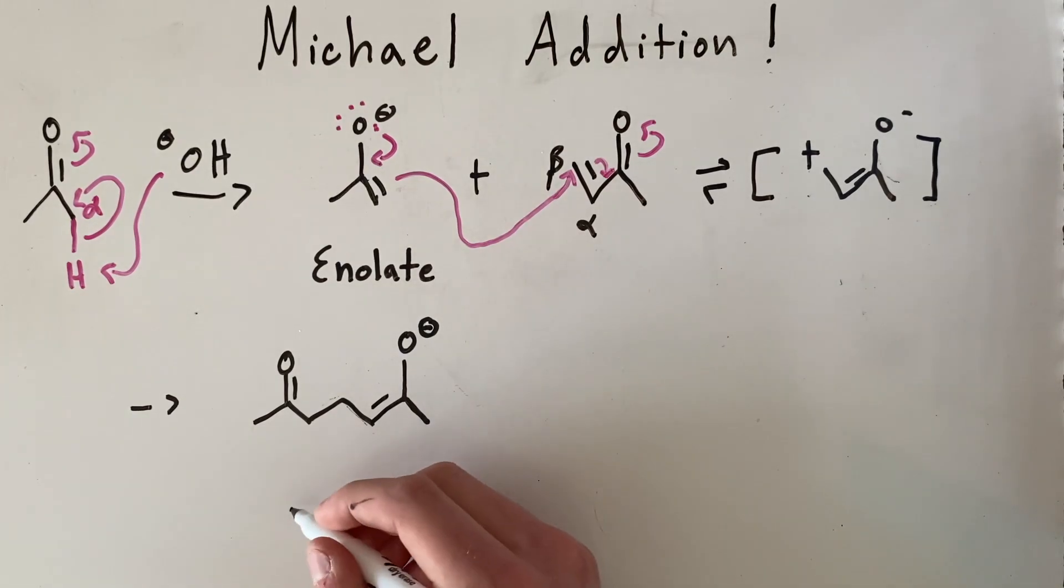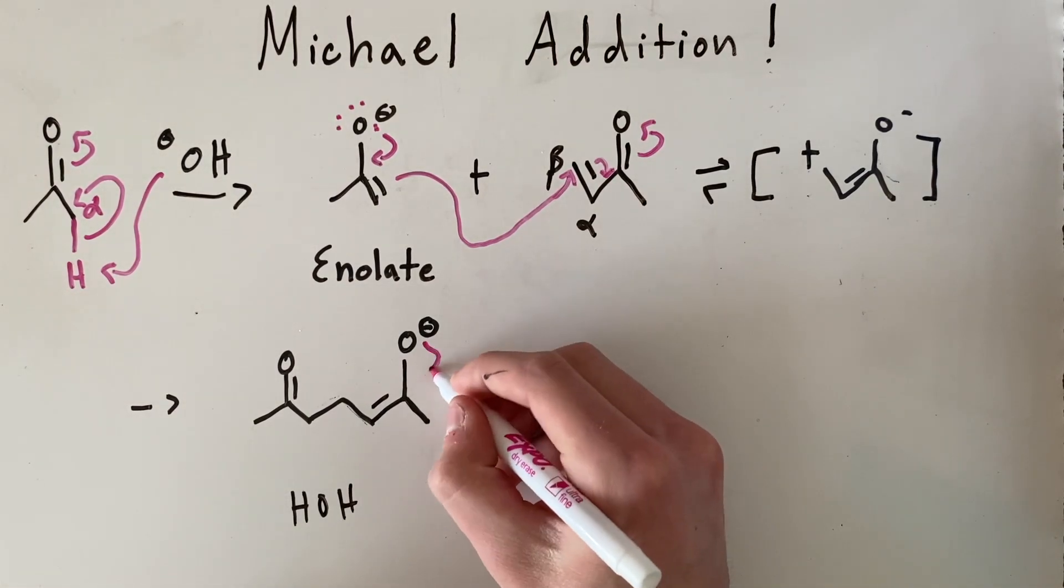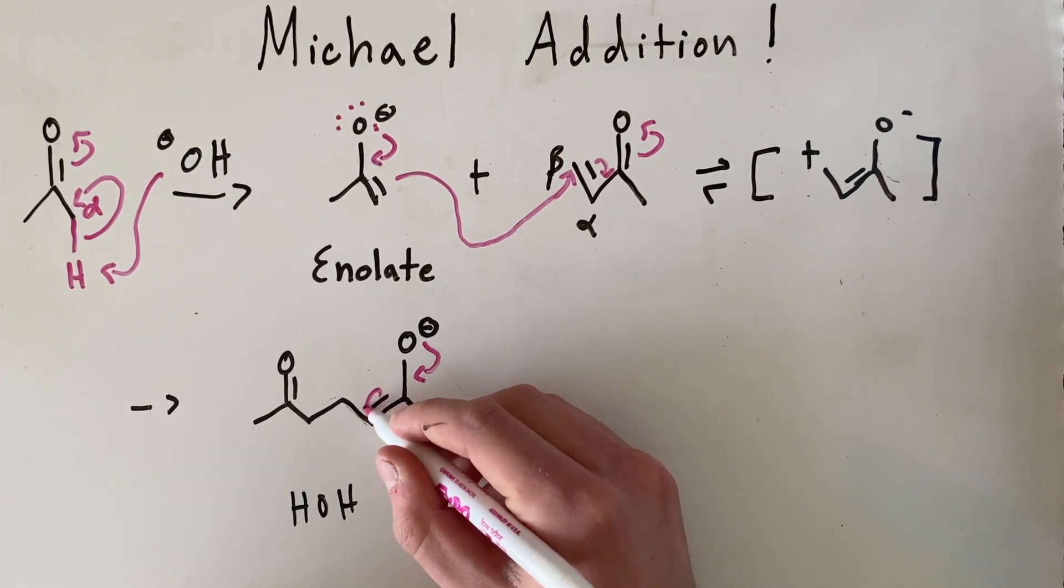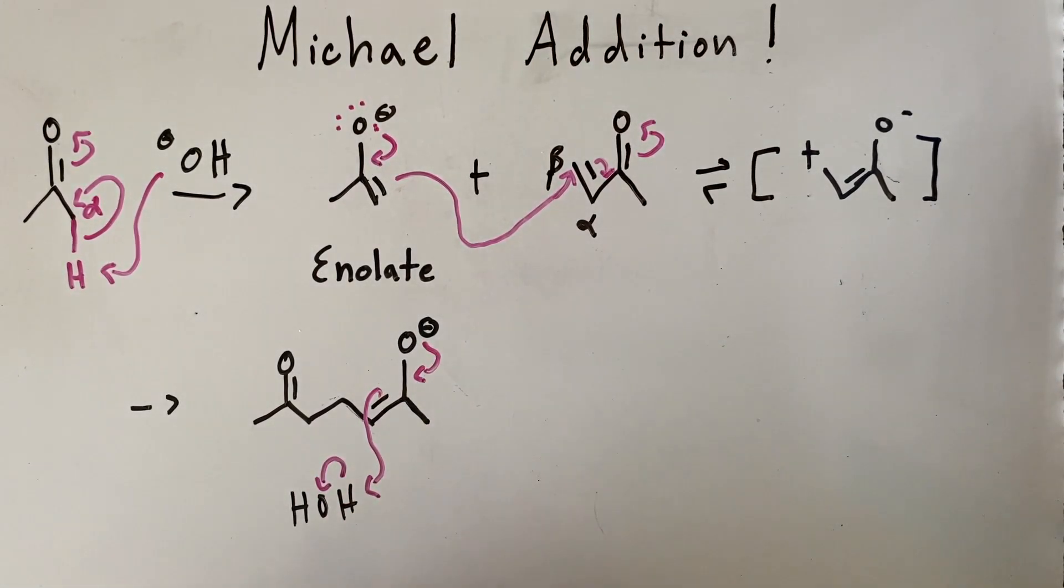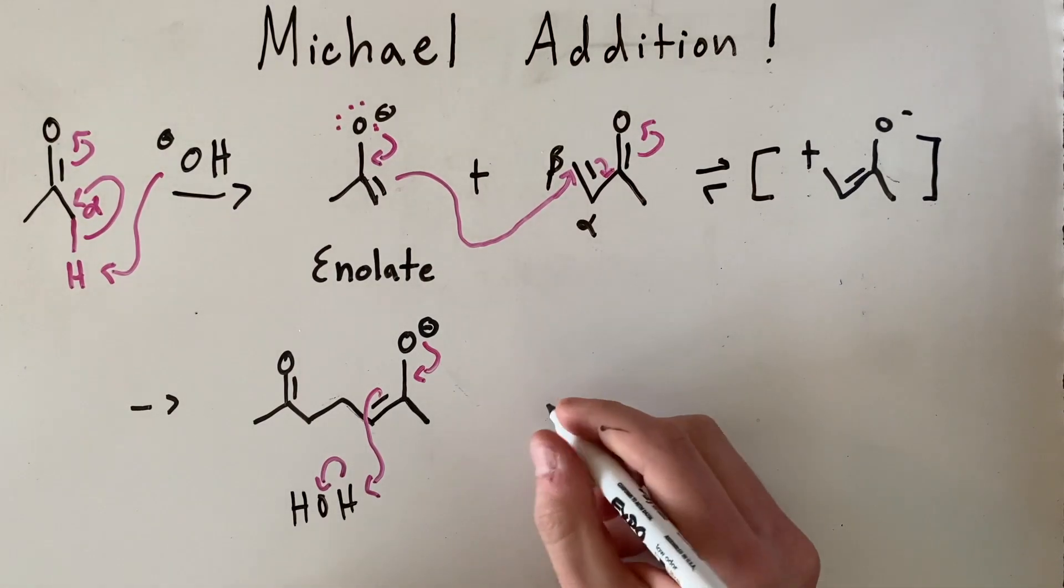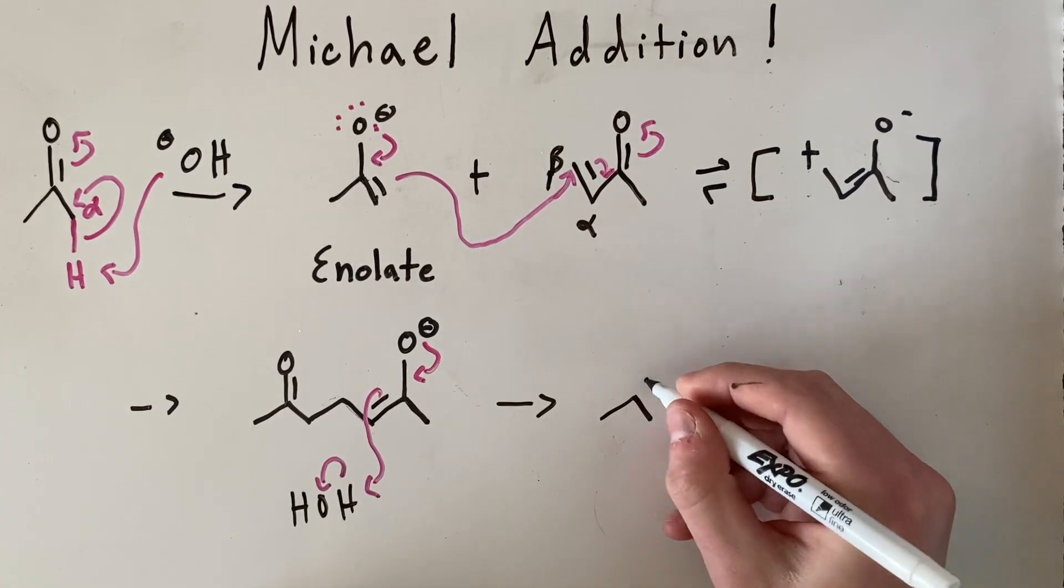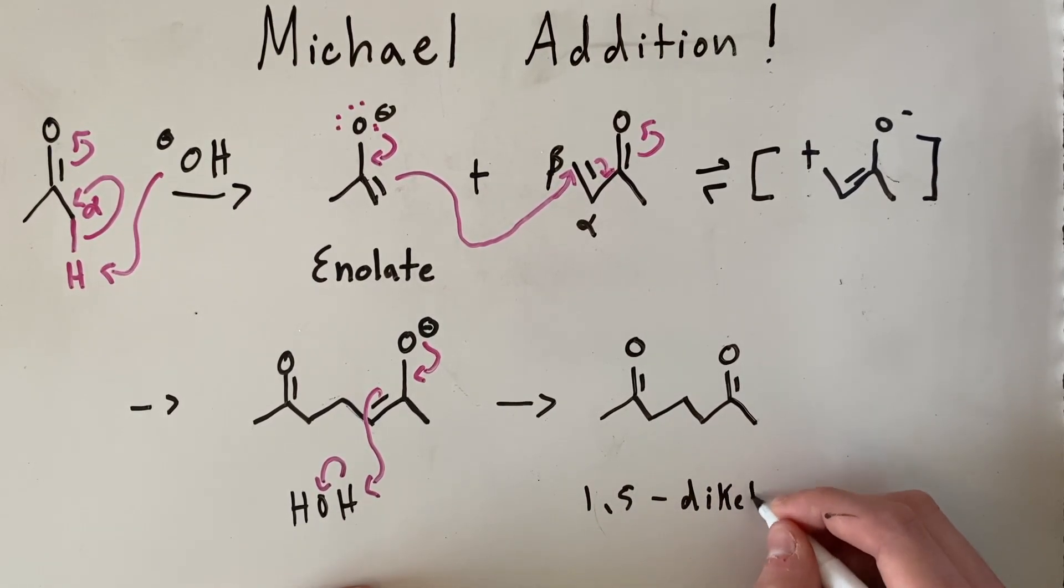So since this is in solution, once these pi electrons here come down to reform the ketone bond, these pi electrons will just come over and pick up the hydrogen and become protonated. So our final product of the Michael addition is a 1,5-diketo product.